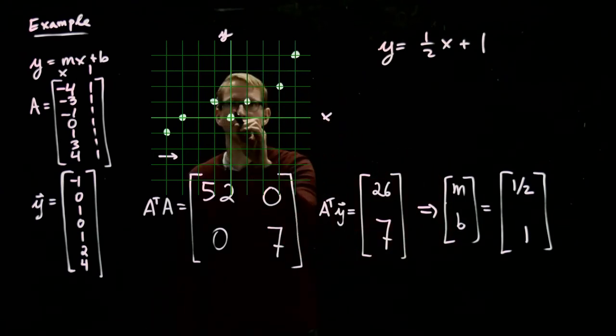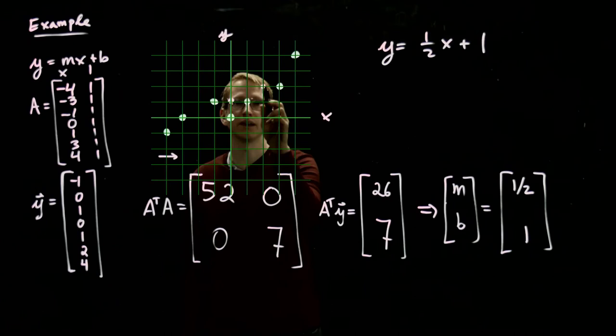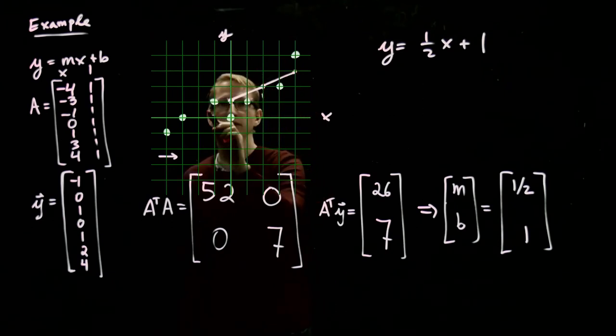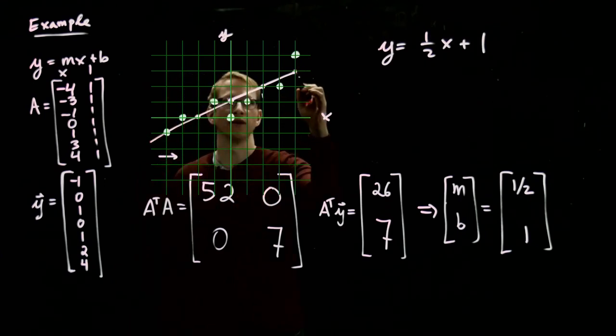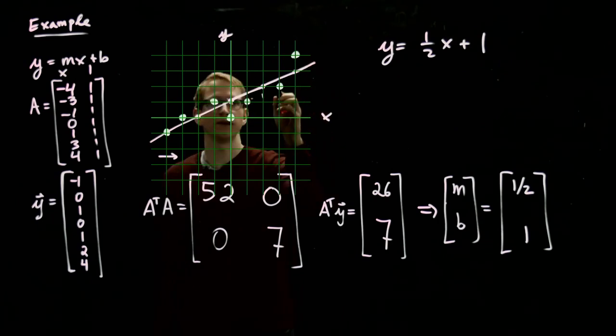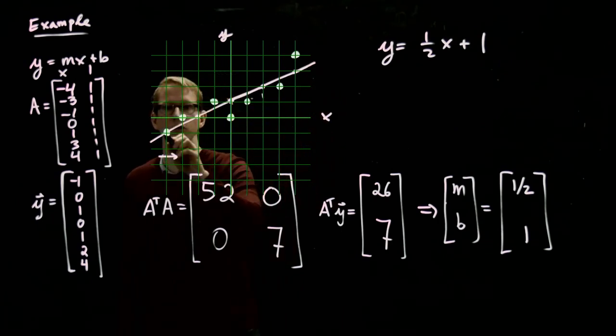So the line that we want to fit this to is 1 half x plus 1, and if we try to sketch what that graph looks like, we know that it goes through 1, so let's include that point here. And it has slope 1 half, so when it moves 2 units over, it moves 1 unit up, so here's the next data point. We connect these two with a straight line, and moving over 2 units to the right, 1 unit up, we connect that with a straight line, and we keep doing this. I mean, this is how I draw if I don't have a ruler or anything on hand. I would try to draw something like this.